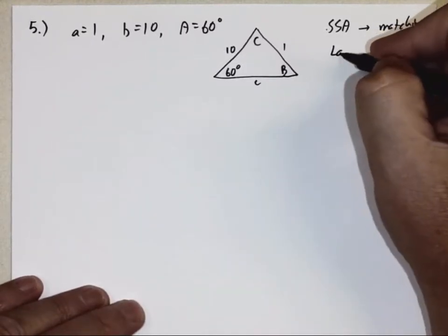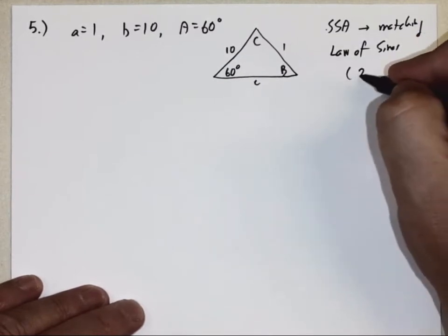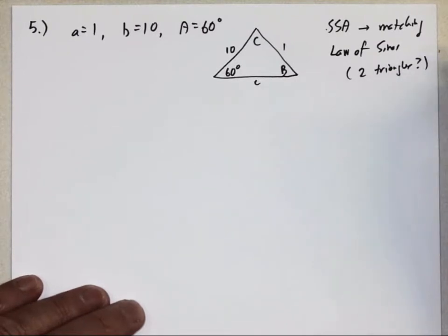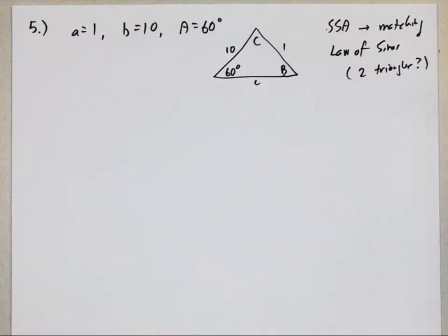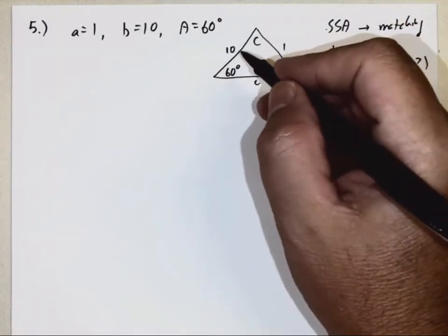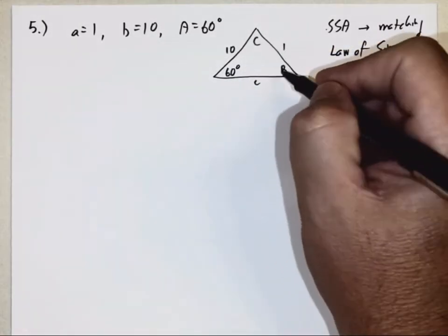So I'm going to use law of sines. But once again, just like the last problem, I have to check, there may be a second triangle. There may be no triangles. So once again, possibilities are no triangle, one triangle, or two triangles. So first thing, actually the only thing I can do is I can try and find angle B.